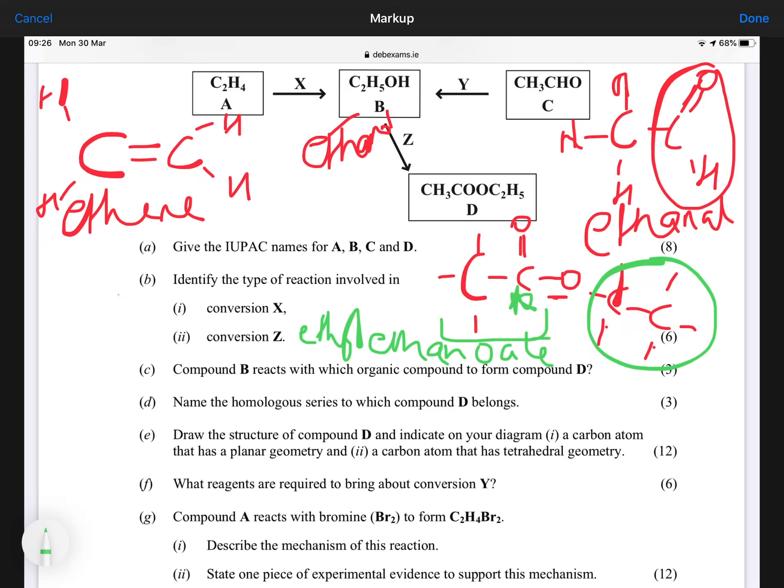Identify the type of reaction involved in X. Straight away, when you see X, you notice that this is an alkene. So the minute you see an alkene, you are thinking addition. So X is addition, or you can call it ionic addition if you like. Z then is an alcohol going to an ester. So Z is esterification. You could also call that substitution or condensation, but we stuck with esterification when we were doing it.